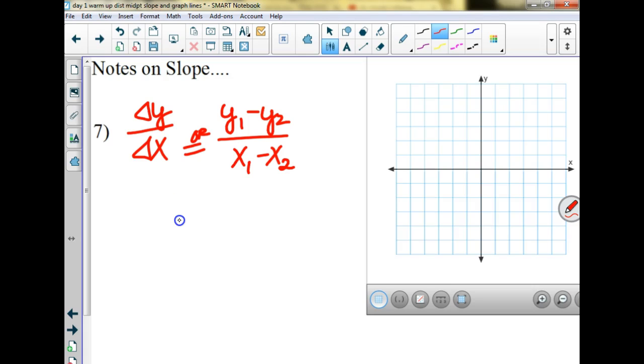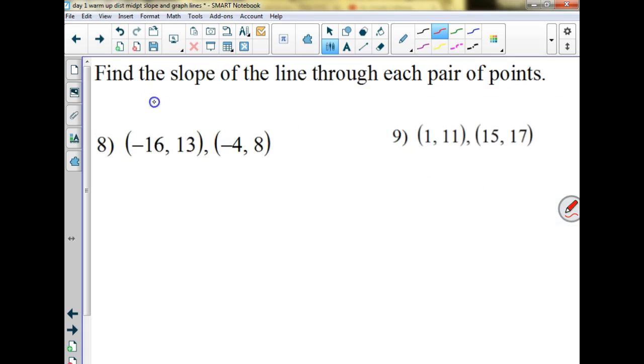Rise over run is a great definition when you're graphing. When I'm just asking you to find the slope between two points, I would rather you gave me one or the other of those. Do I need to do one on the picture or can we just go to the examples? X, x, y, y. But which numbers do we like first? The y's. So we could go 13 minus 8. That seems like a good plan.